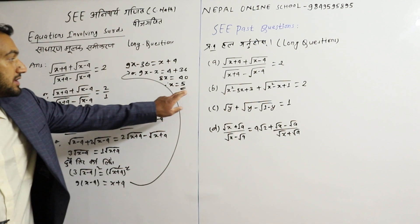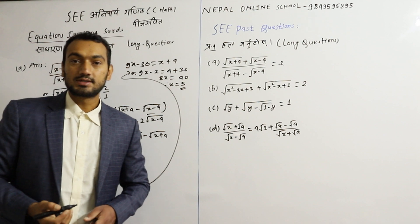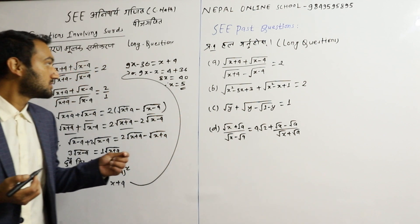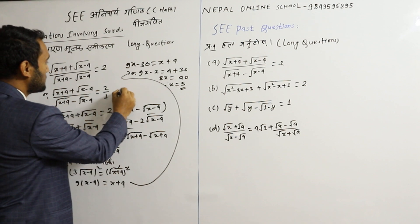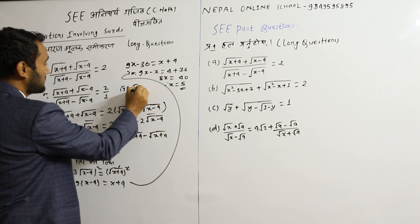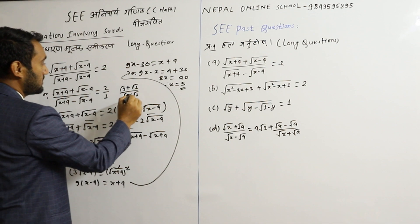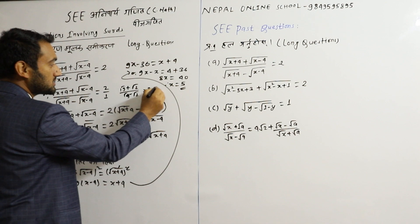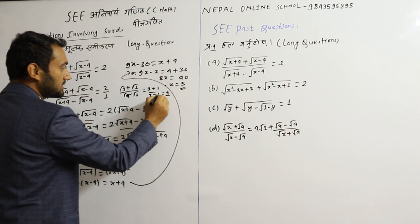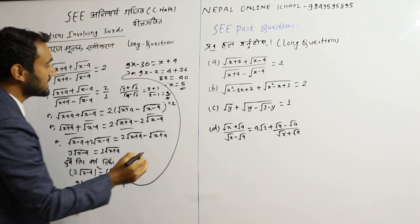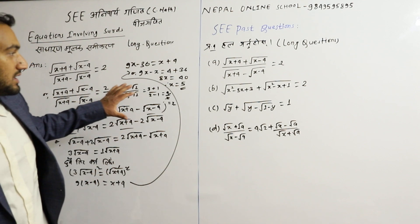So what do we do? Well, we check: 5 plus 4 and 5 minus 4. 5 minus 4 gives 1 — root 9 is 3 and root 1 is 1 — and the answer checks out. Now let's go to the next question.